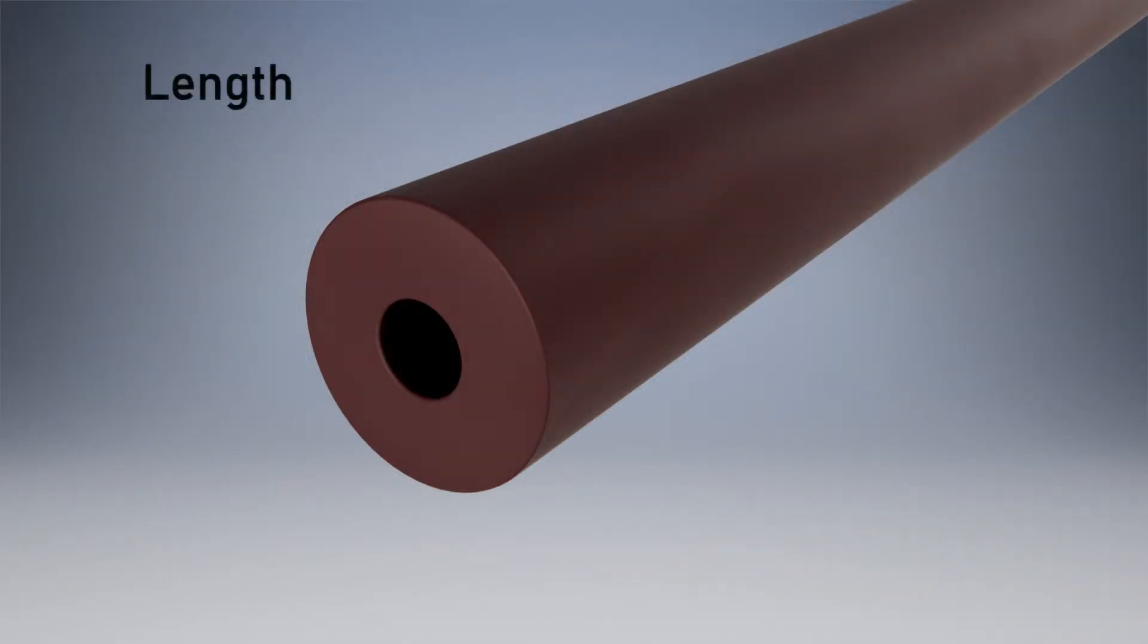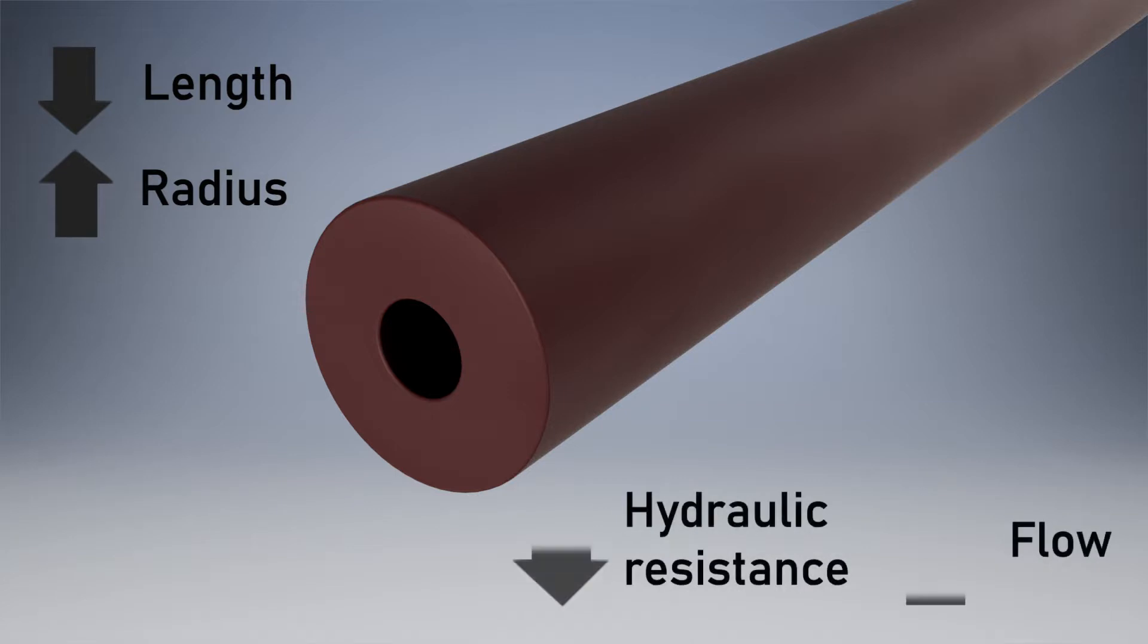On the other hand, with a tube of lower length and bigger radius, we will have a lower hydraulic resistance, which results in higher flow.